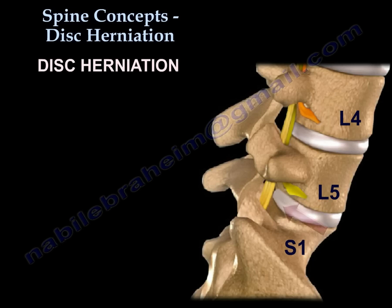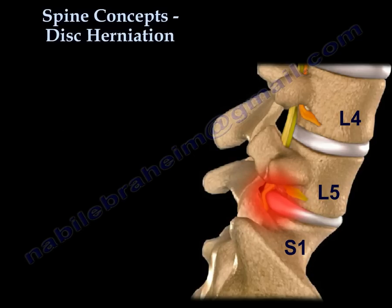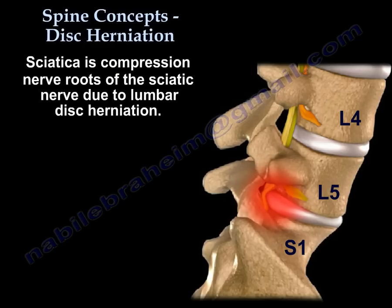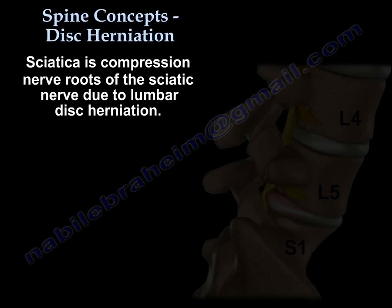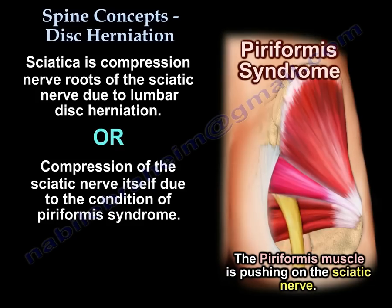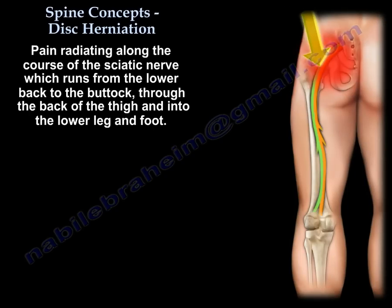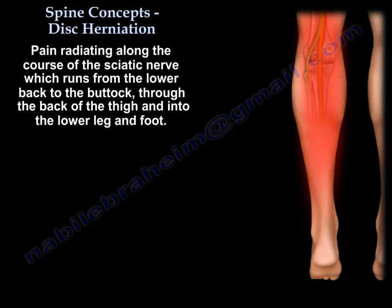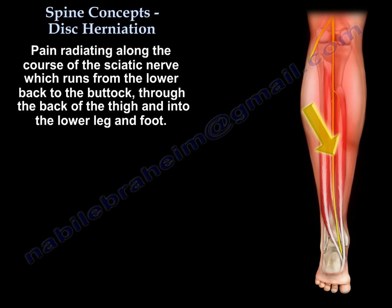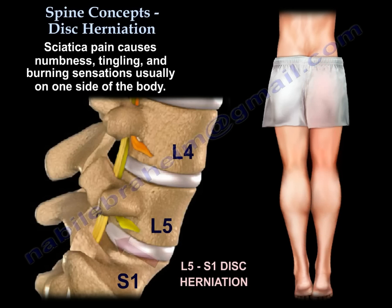Disc herniation affecting either L5 or S1 nerve roots will give you sciatica. Sciatica is compression of the roots of the sciatic nerve — as in disc herniation — or compression of the sciatic nerve itself, as in piriformis syndrome. That will give you pain in the lower back and buttock, and sharp shooting pain in the leg down to the foot, with numbness, tingling, and burning, usually on one side.